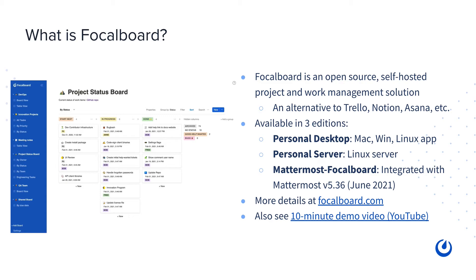It's currently available in three editions. There's what we call Personal Desktop, which is a self-contained standalone app for Mac, Windows, and Linux. You can download it directly from the Mac and Windows app stores or direct downloads for Linux. There's a self-hostable server called Personal Server that you can self-host on Linux on your own infrastructure. And most exciting, there's what we call Mattermost FocalBoard, which is FocalBoard that's directly integrated with Mattermost, starting in the 5.36 release.